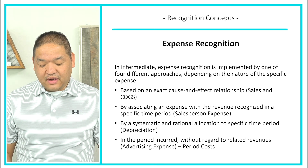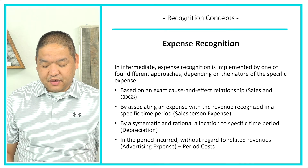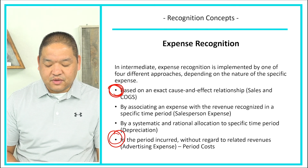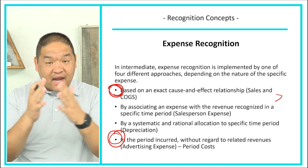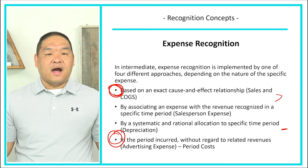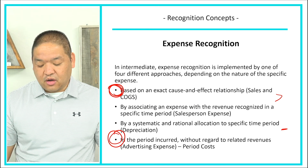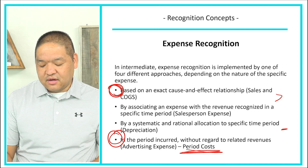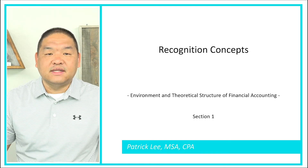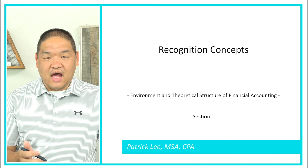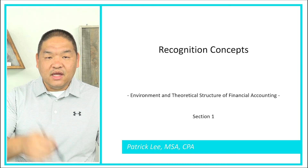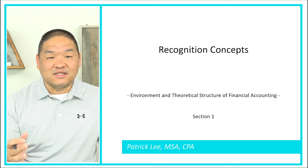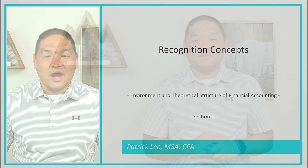The fourth approach is recognizing the expense in the period without regard to related revenue — for example, advertising expense as a period cost. These categories expand on what we covered in principles, dividing costs more narrowly. That is a look at recognition concepts: when we meet the four criteria — definition, measurability, relevance, and reliability — we can recognize an element into the financial statement, with the two biggest categories being revenue and expense transactions.